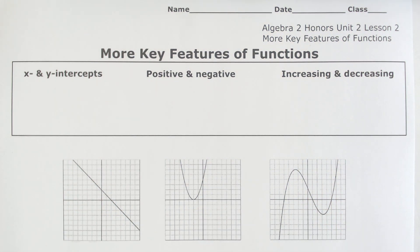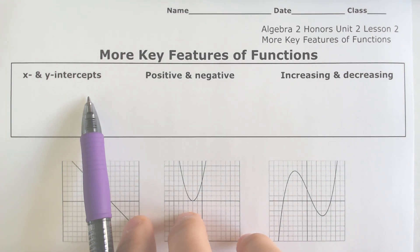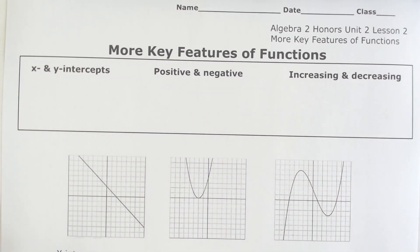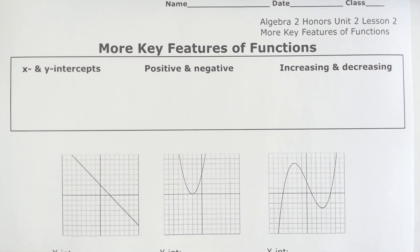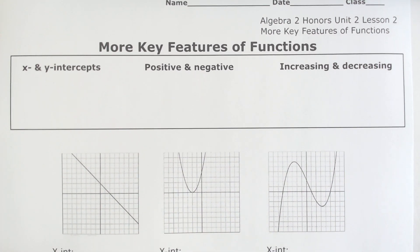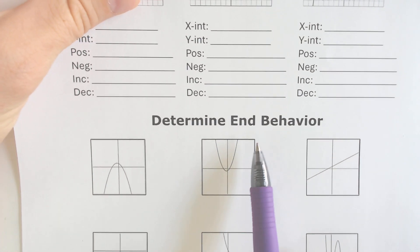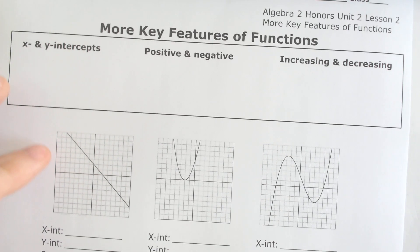Hello, and welcome back to another episode of Math with Sohn. Today, we're going to be doing some more key features of graphs. We're going to be doing some x and y-intercepts, when the graph is positive and negative, increasing and decreasing, and even some end behavior. So let's get into it.